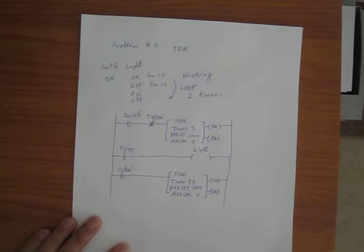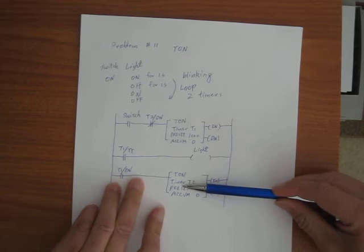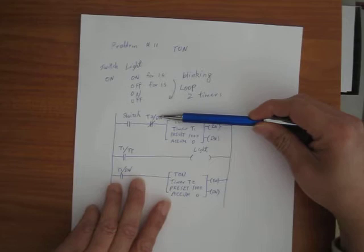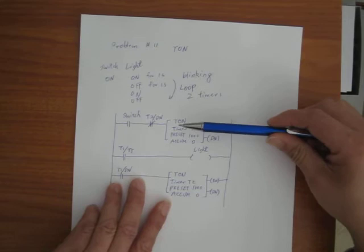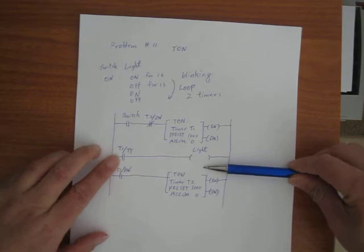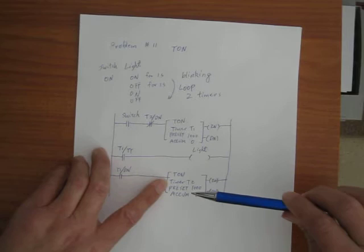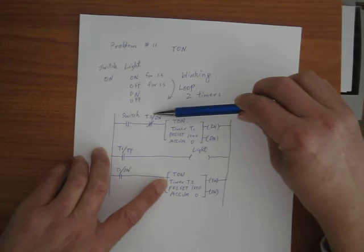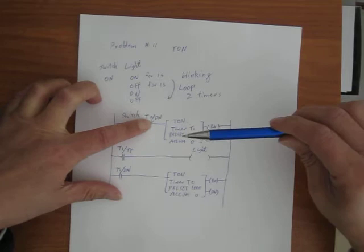Let's imagine at time equal to zero you turn the switch on. Because T2 hasn't been turned on yet, T2 DN is not true — it's false, it's 0. Therefore NOT of 0 is going to be 1, so this rung is on and you turn Timer 1 on. The light will be on for one second because of the TT. After one second it goes off, and at this point T1 DN is true so T2 becomes true.